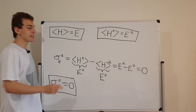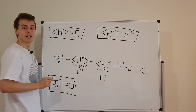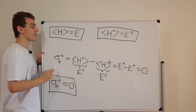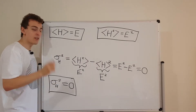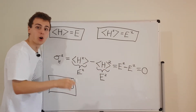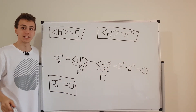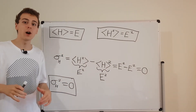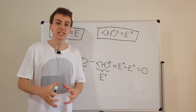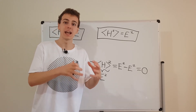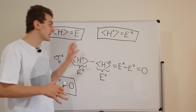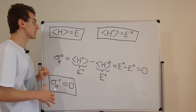And the value that you get is E — the expectation value — which is going to be the value you get every single time you perform a measurement on a stationary state. So that is actually why these states are called states of definite energy. They're very special; that's a unique property of these states.